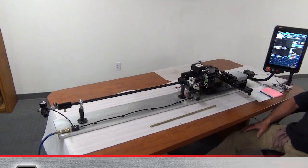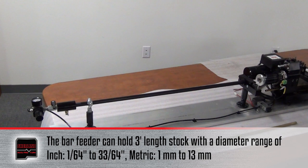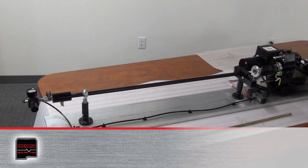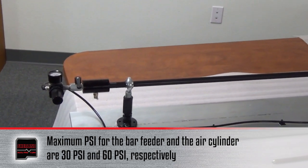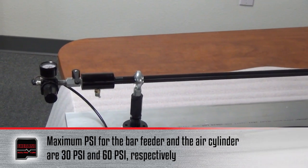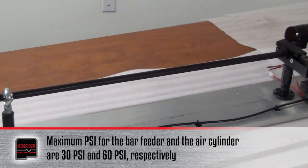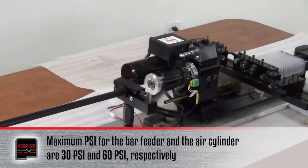The bar feeder is designed to take three foot lengths of stock. Maximum diameter stock you can hold is half inch. The PSI for the bar feeder is at about 30 PSI. The PSI for the air cylinder that opens and closes the lever collet closer for your collet is at 60 PSI.